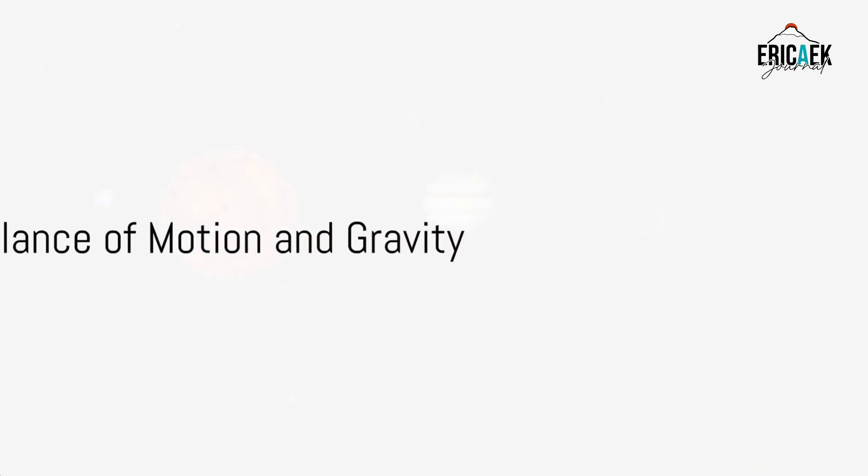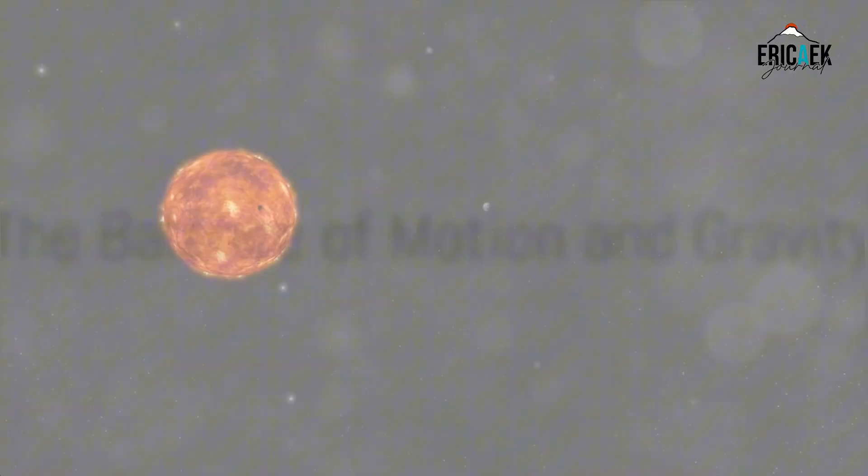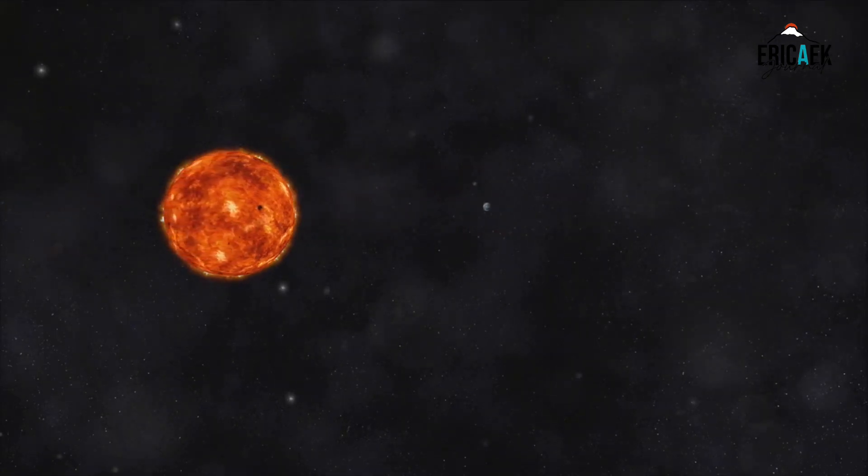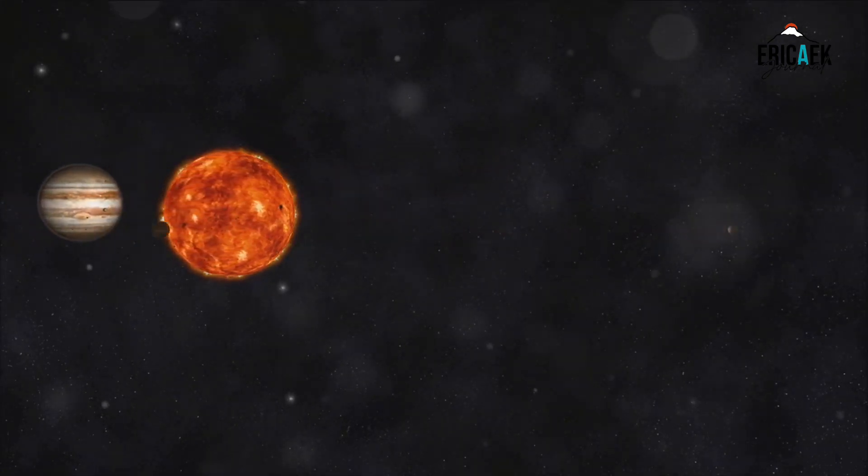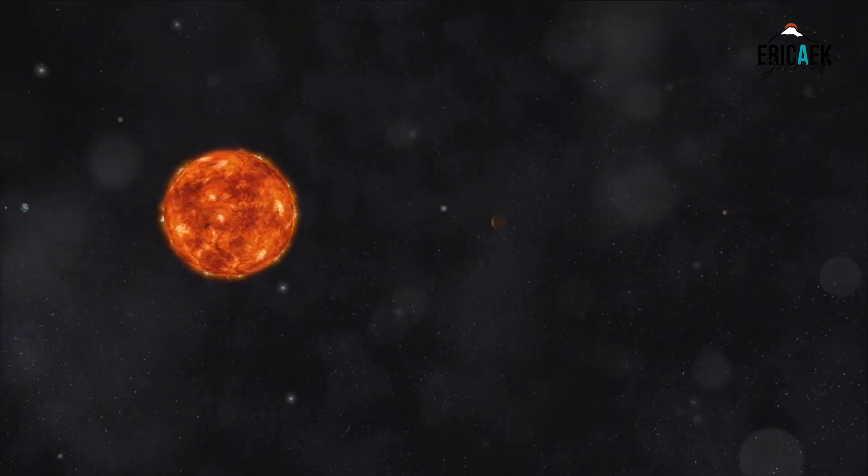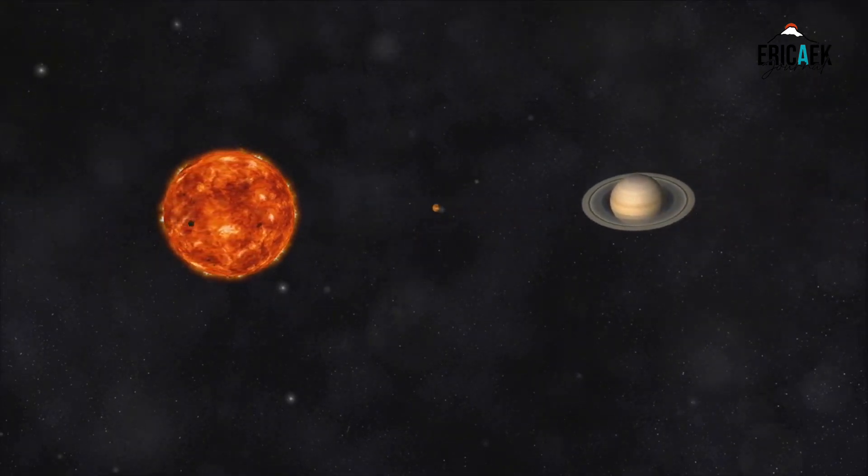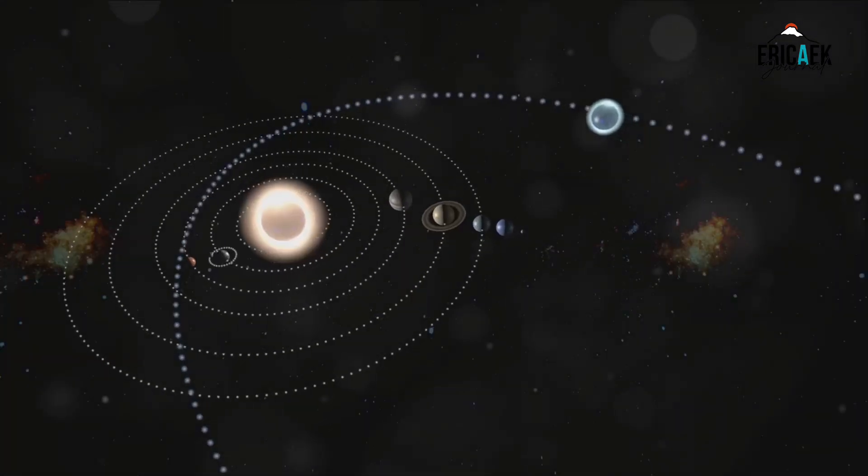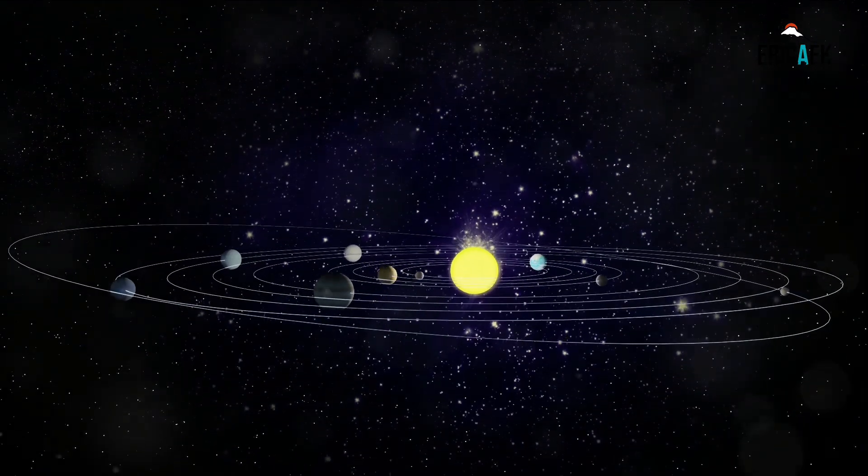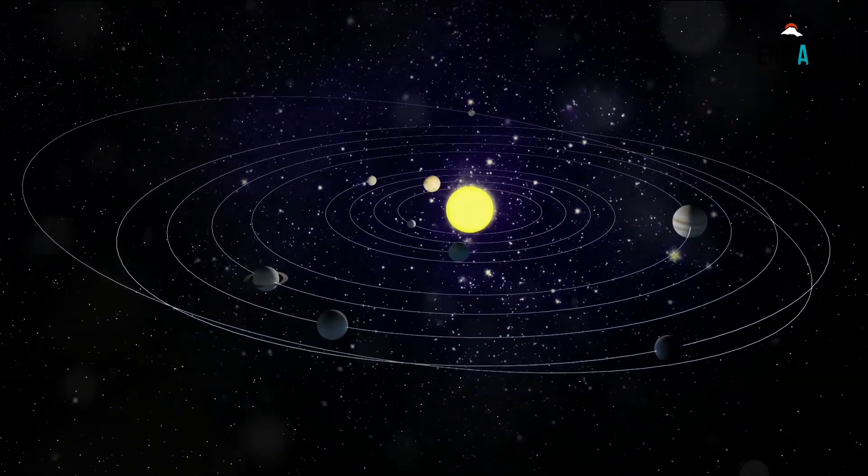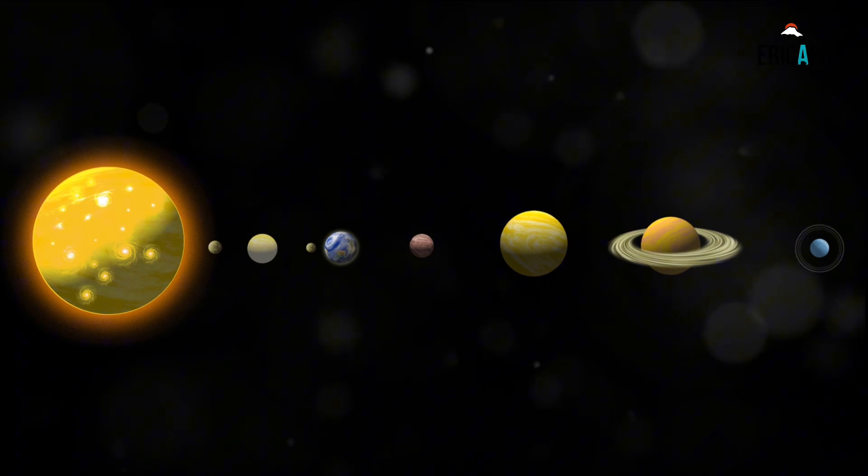Now, you might be thinking, if the Sun is pulling us in, why don't we just fall into it? The answer lies in our forward motion. As Earth and other planets are being drawn towards the Sun by its gravitational pull, they're also moving forward. Imagine it like this: you're trying to pull a fast-moving skateboard towards you. The skateboard veers but it doesn't come straight to you. It's the same with the planets. Instead of falling directly into the Sun, they keep missing it. This creates a stable path or orbit around the Sun.